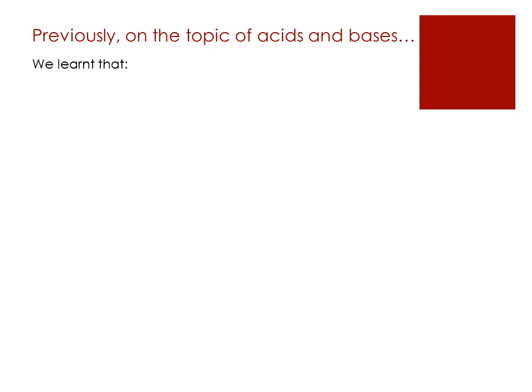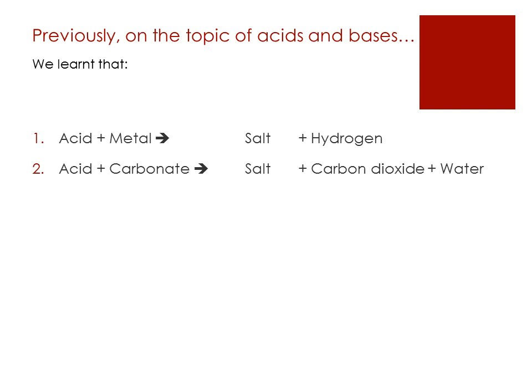Can you recall what we have learned previously in the topic acids and bases? Looking back on the chemical reactions of acids, we learned that acids react with metals to give salt and hydrogen. Acids react with carbonate to give salt, carbon dioxide and water. Lastly, acids react with bases to give salt and water.